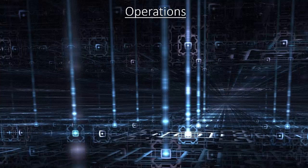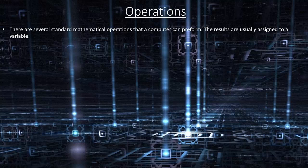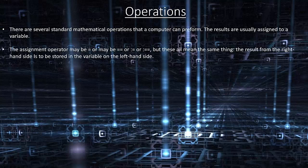Operations. There are several standard mathematical operations a computer can perform; the results are usually assigned to a variable. The assignment operator may be written as =, ==, :=, or :==, but they all mean the same thing — the result from the right-hand side is to be stored in the variable on the left-hand side.